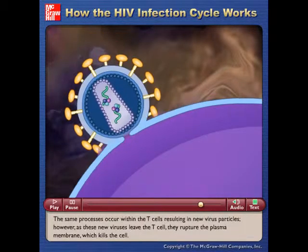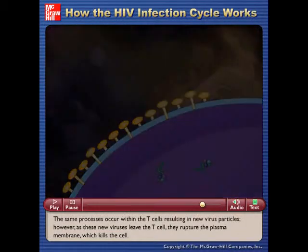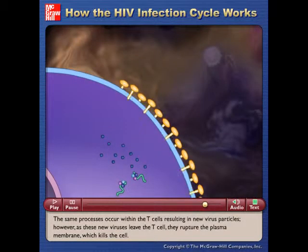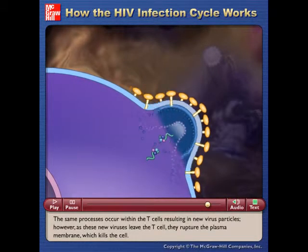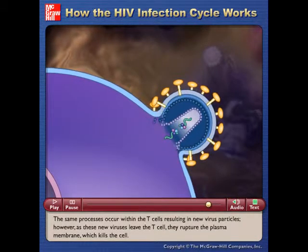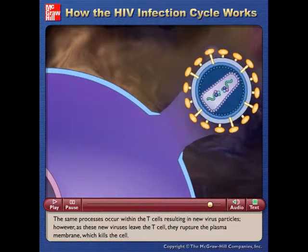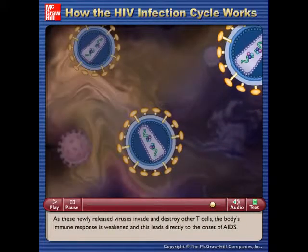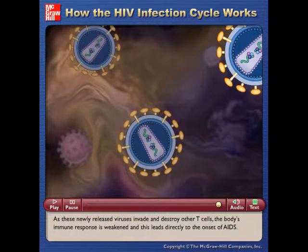The same processes occur within the T cells, resulting in new virus particles. However, as these new viruses leave the T cell, they rupture the plasma membrane, which kills the cell. As these newly released viruses invade and destroy other T cells, the body's immune response is weakened and this leads directly to the onset of AIDS.